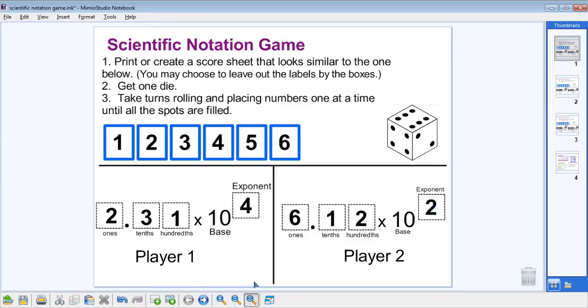We now have, in the scientific notation, two and thirty-one hundredths times ten to the fourth power. And player two would say their scientific notation, six and twelve hundredths times ten to the second power.